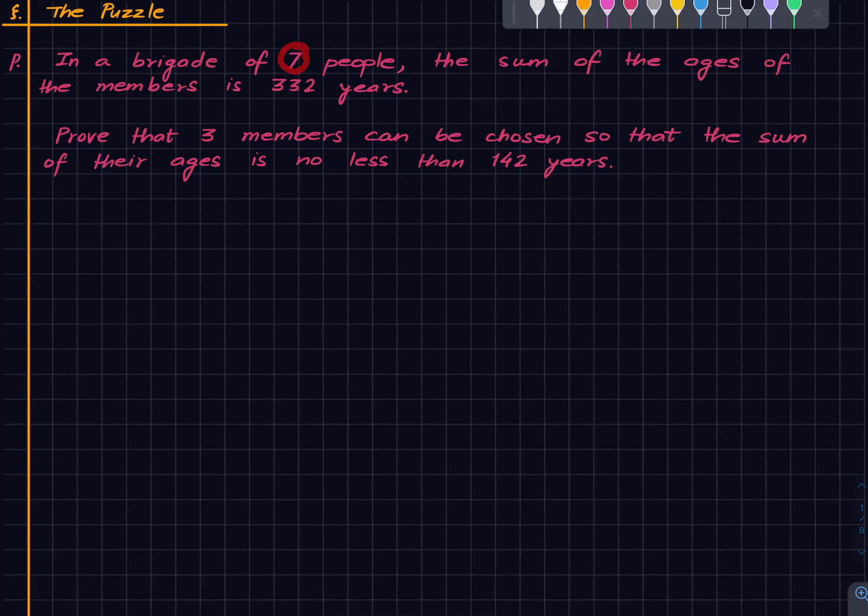There are seven people such that the sum of their ages is 332 years.